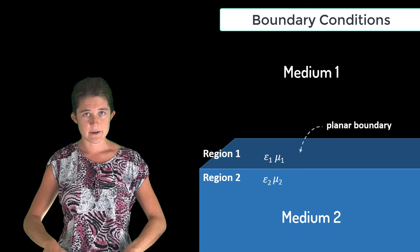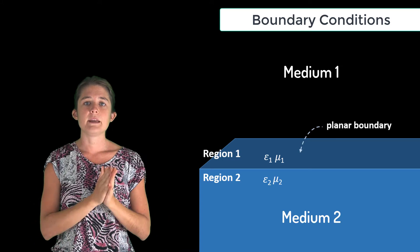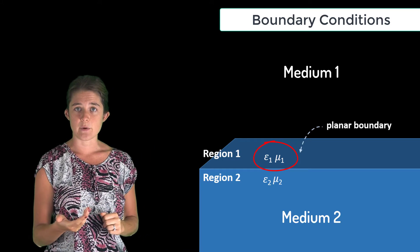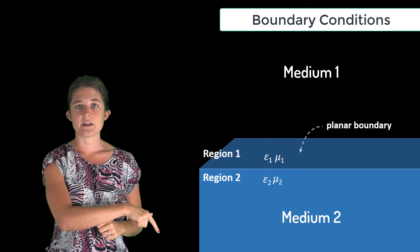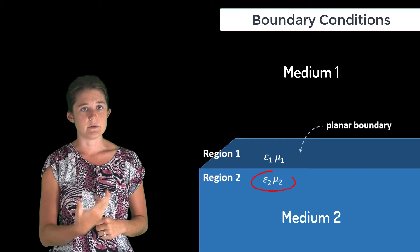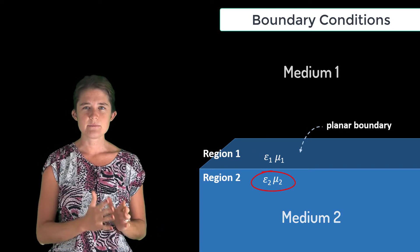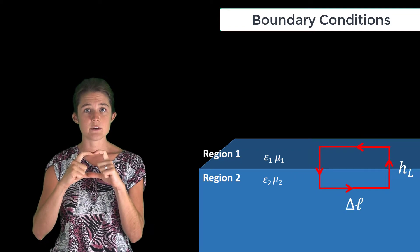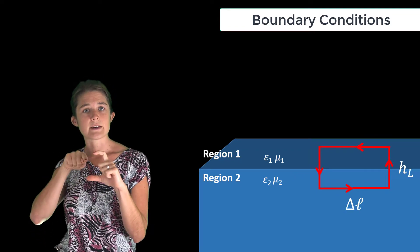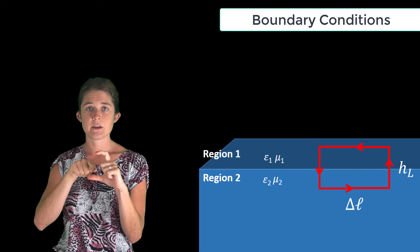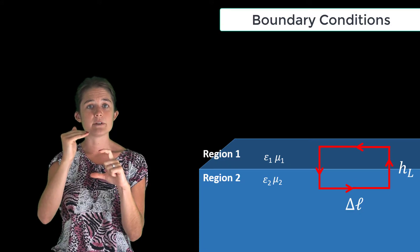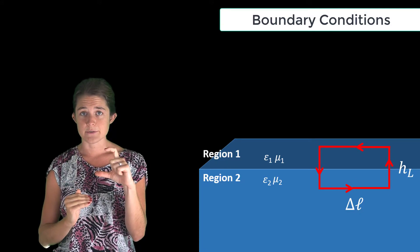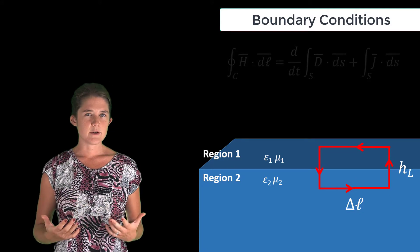Medium one has material properties mu one and epsilon one, and medium two has material properties mu two and epsilon two. Now let's imagine a very small loop oriented with its normal vector tangential to the boundary. The loop is half sticking up into region one and half sticking down into region two.